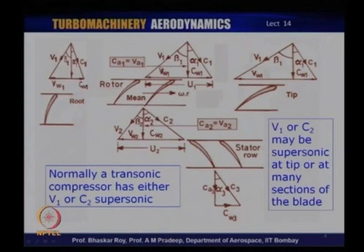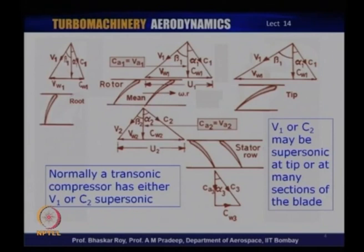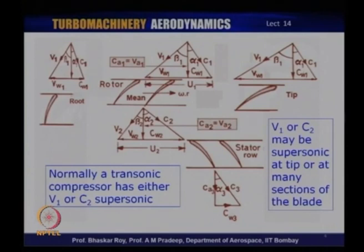Higher the velocity field, the more possible energy transaction there is, because energy transaction is directly dependent on the velocity field operative through the blade rows. This is the fundamental basis on which transonic compressors were conceived: if you could modify the velocity vector diagrams and accommodate supersonic flow into the blades, it is possible for the blades to achieve higher pressure ratios, and those higher pressure ratios could actually shrink the size of the multistage compressor and the entire engine.